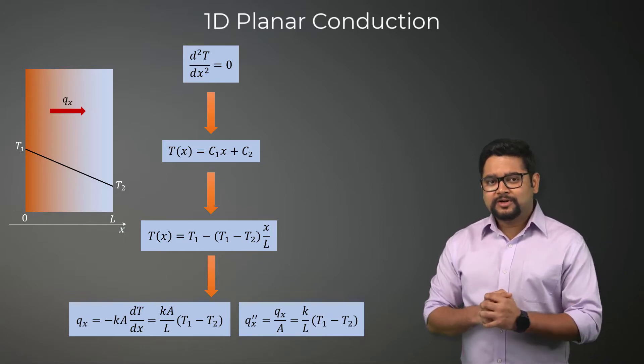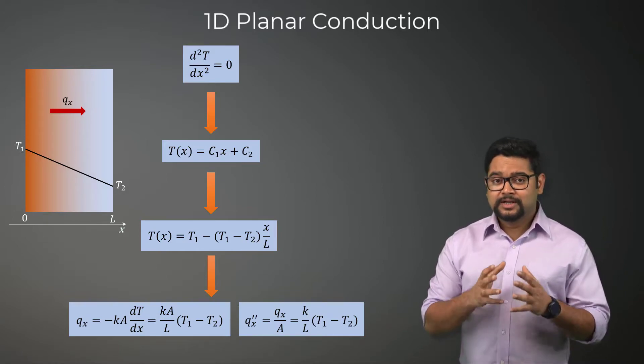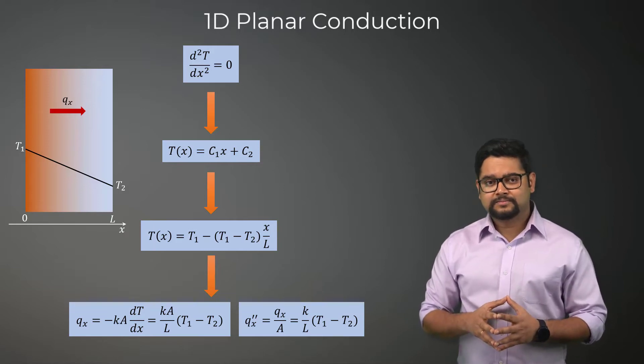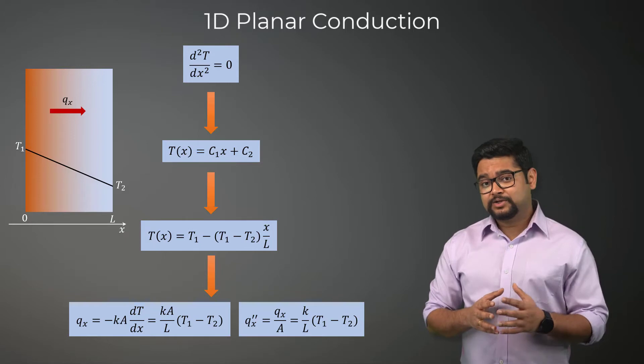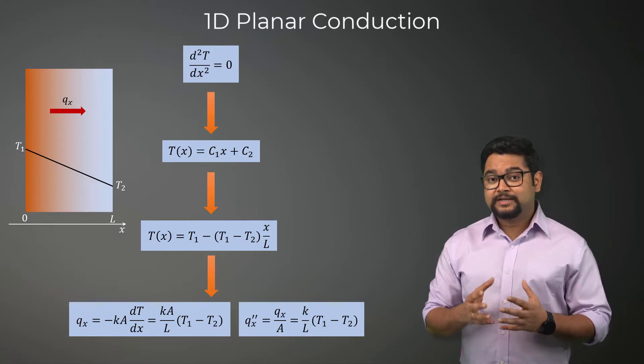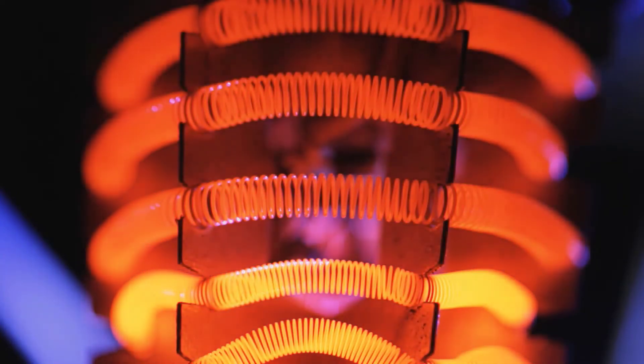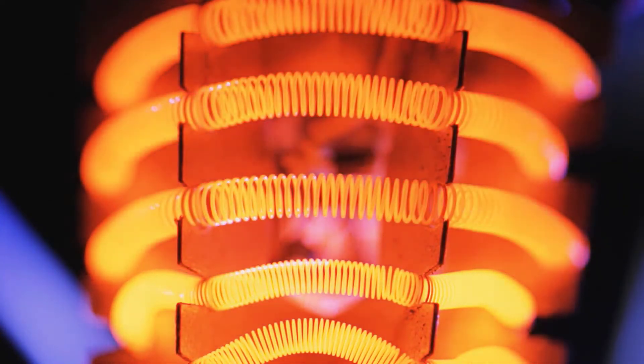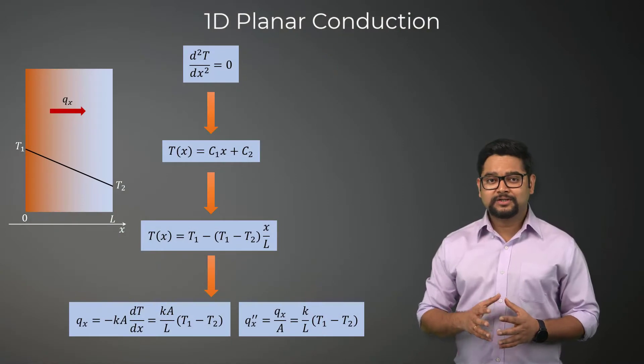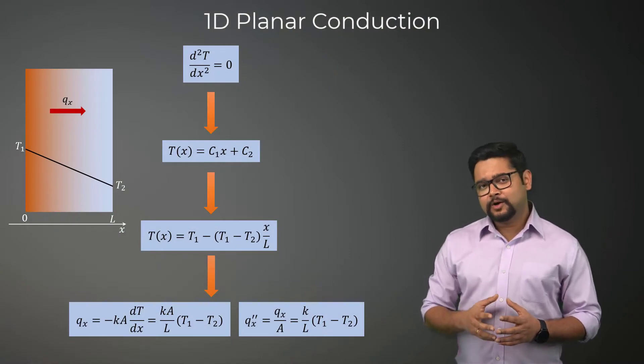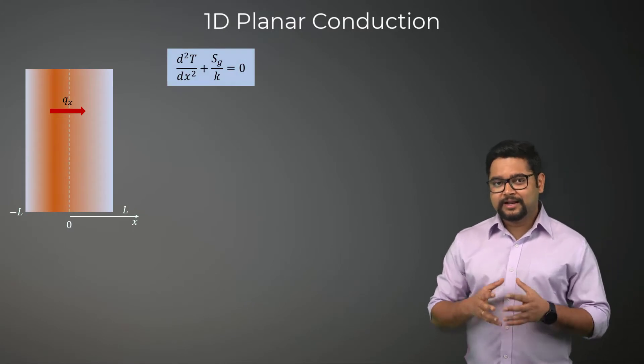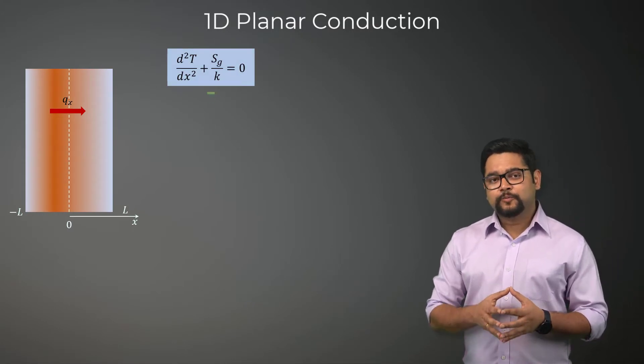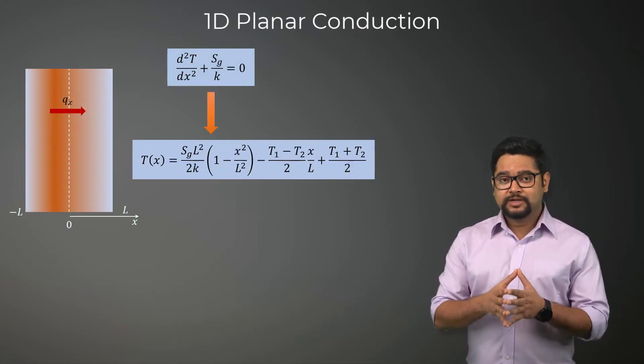Now, let's include a constant volumetric heat source in our planar slab model. A very good example of this is the case of an electrical resistance heater where the heat is generated by the flow of electricity through a resistance element. The one-dimensional conduction equation now includes a source term as shown here. Integrating and applying boundary conditions, we obtain a temperature distribution as shown.